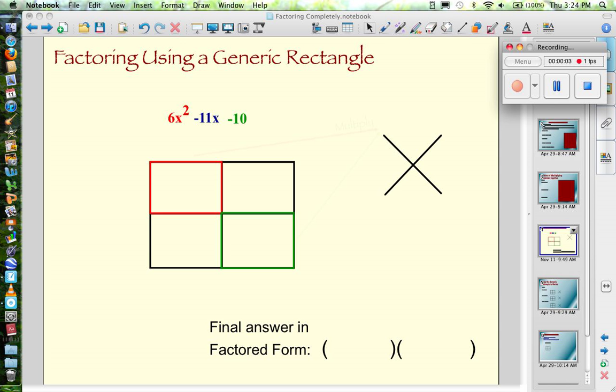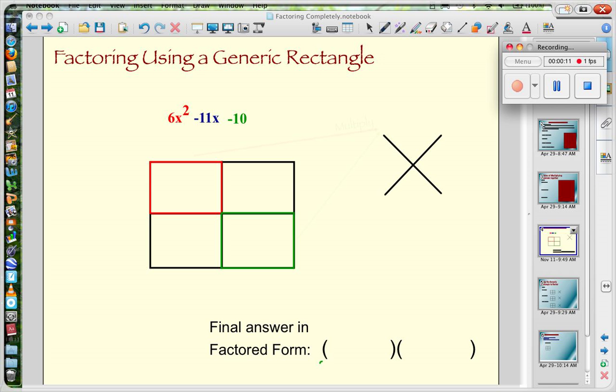Here's an example of factoring a quadratic expression using a generic rectangle. Our goal is to end up with two binomial factors that's going to end up looking like that.